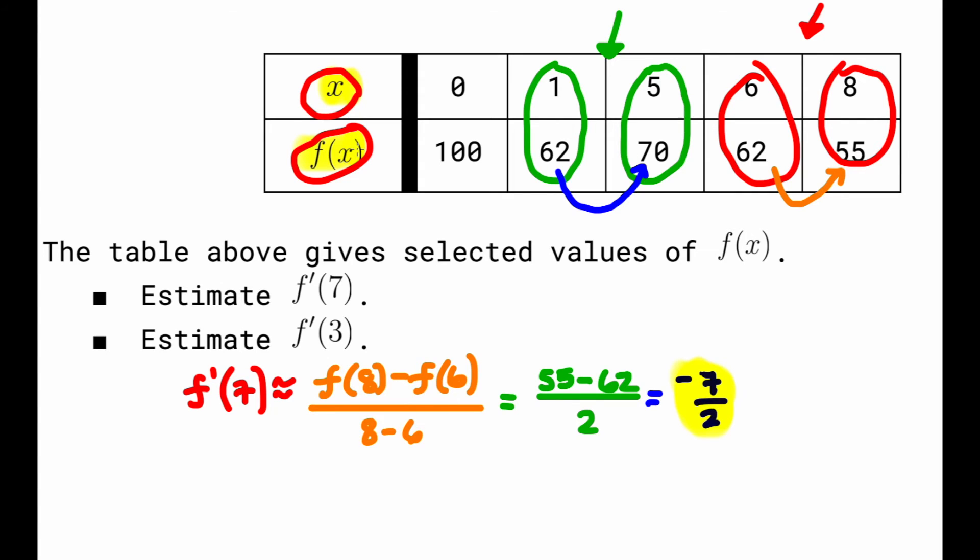Next, I'm going to do the estimation of f'(3) by finding the average rate of change between x equals 1 and x equals 5. If we work this out, you're going to end up with 8 over 4, which is just 2. Remember I said before the rate of change should be positive, so you do end up getting that positive value with the 2.